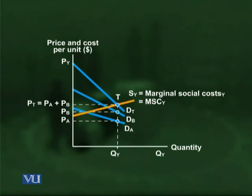We have seen that public goods can be a cause of market failure because people do not reveal their true preferences (hidden preferences problem) and have a tendency to use the public good for free (free rider problem). Due to these two problems, the private sector will not come forward to produce public goods, resulting in a suboptimal amount of public goods being produced in the market.